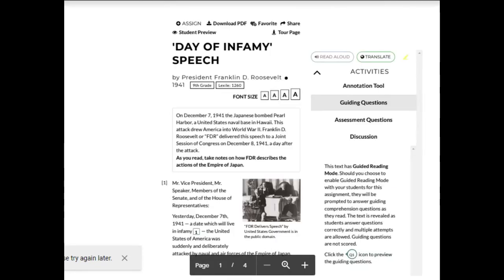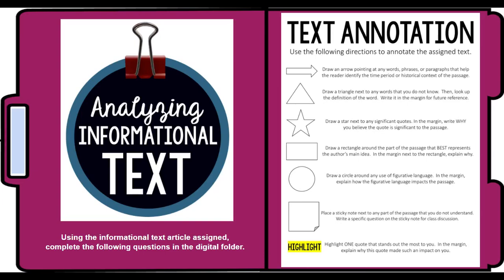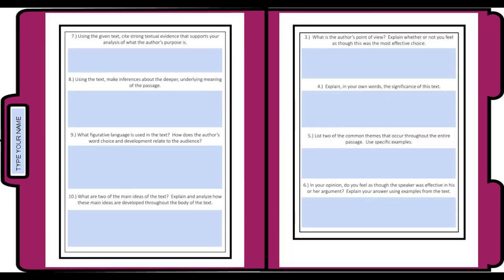Now we'll give you a second — you can pause the video here to mark things down as you need them. So at this point, hopefully you've gone through the speech and marked what you needed to mark. Now let's take a look at how we might actually use those. Using the given text, cite strong textual evidence that supports your analysis of what the author's purpose is. Find parts in the speech that explain why he's making the speech, and be able to demonstrate this is why the speech exists.